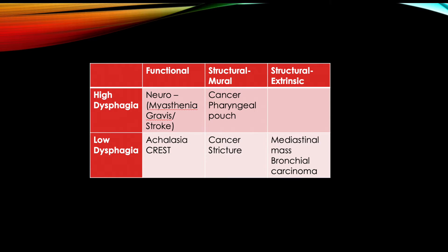There's a handy table splitting high and low dysphagia. We can't use it completely yet because we don't have enough information — we need to know whether this sounds neurological or structural and compressive. But just by asking where the issue with the swallow is, we're already able to section the differential diagnosis in two and knock down some possibilities based on this information.